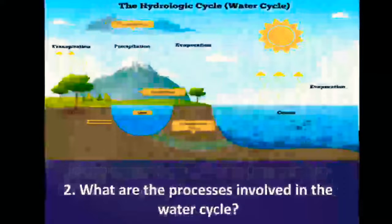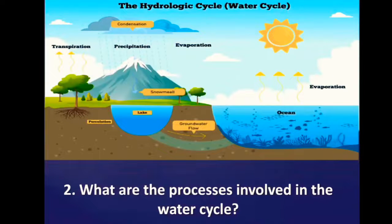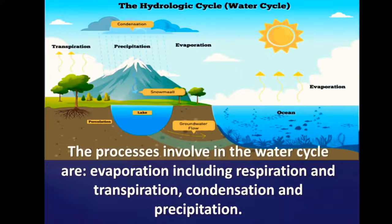Number two: what are the processes involved in the water cycle? The processes involved in the water cycle are evaporation, including respiration and transpiration, condensation, and precipitation.